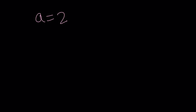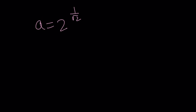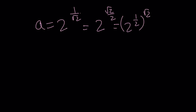Let's simplify our solution. A equals 2 to the power of 1 over root 2. I can also write this as 2 to the power root 2 over 2, by rationalizing the denominator. And this can be written as 2 to the power of 1 half, all to the power of root 2. Since 2 to the power 1 half is root 2, our solution can also be written as root 2 to the power of root 2.